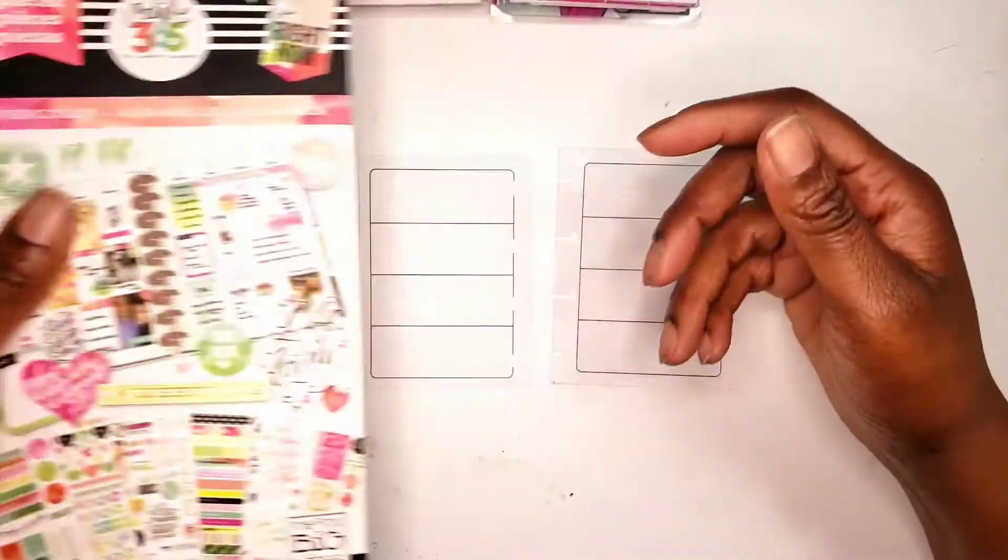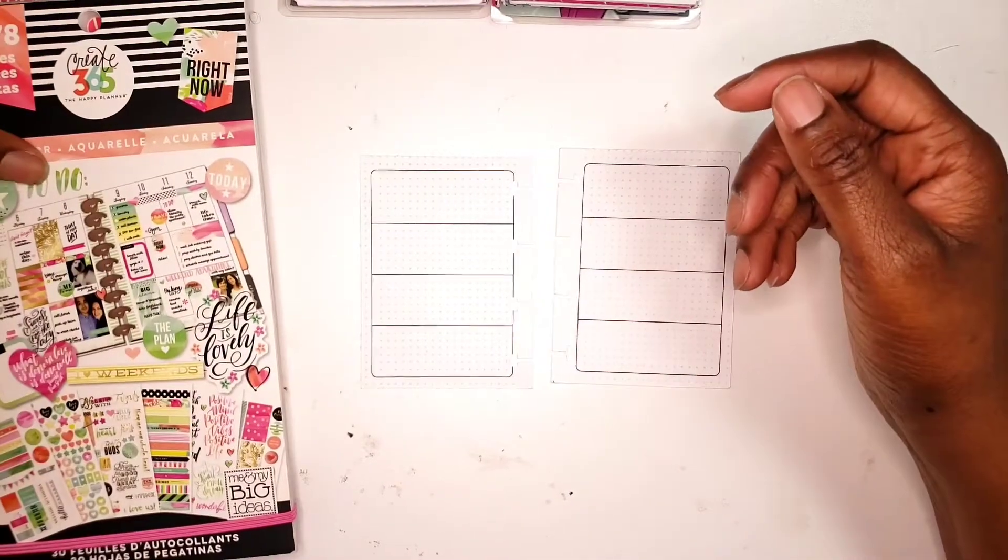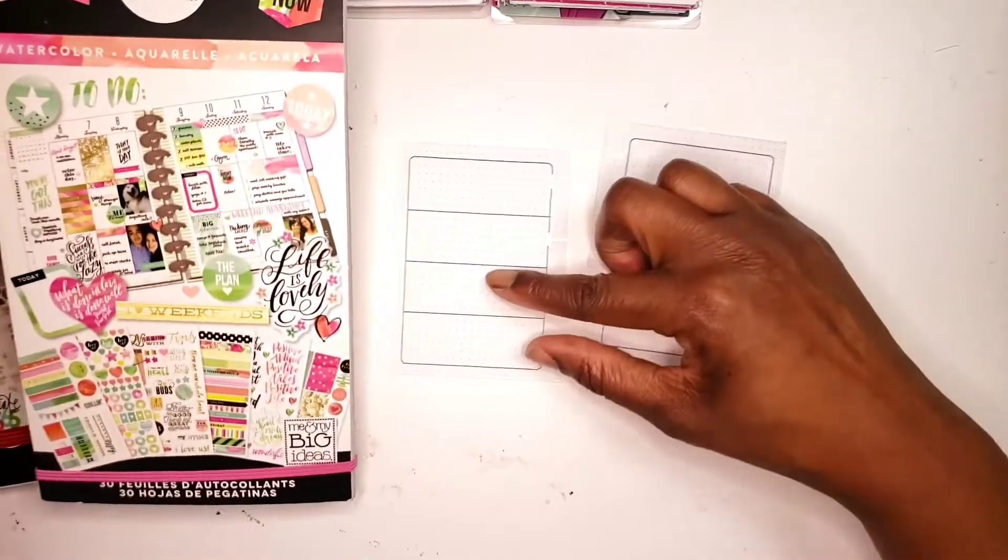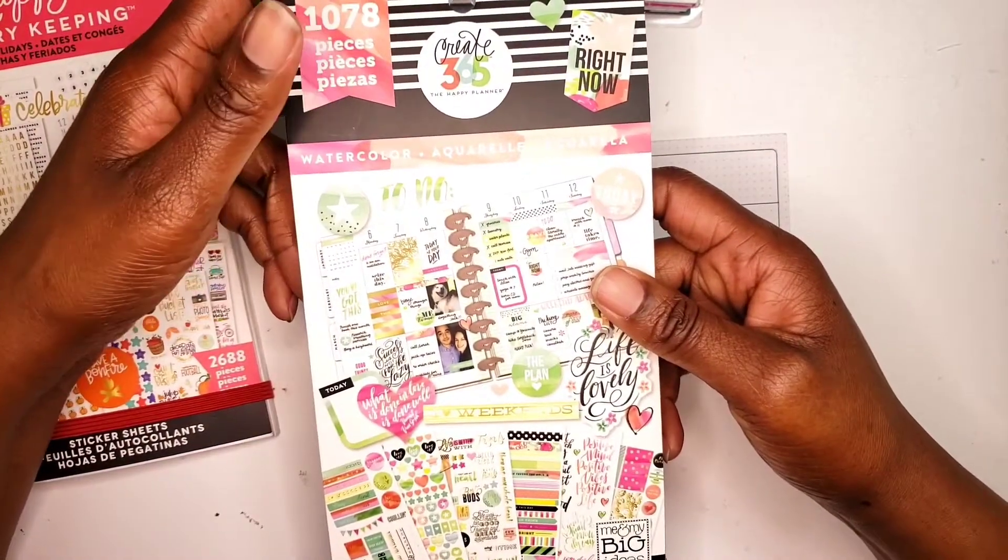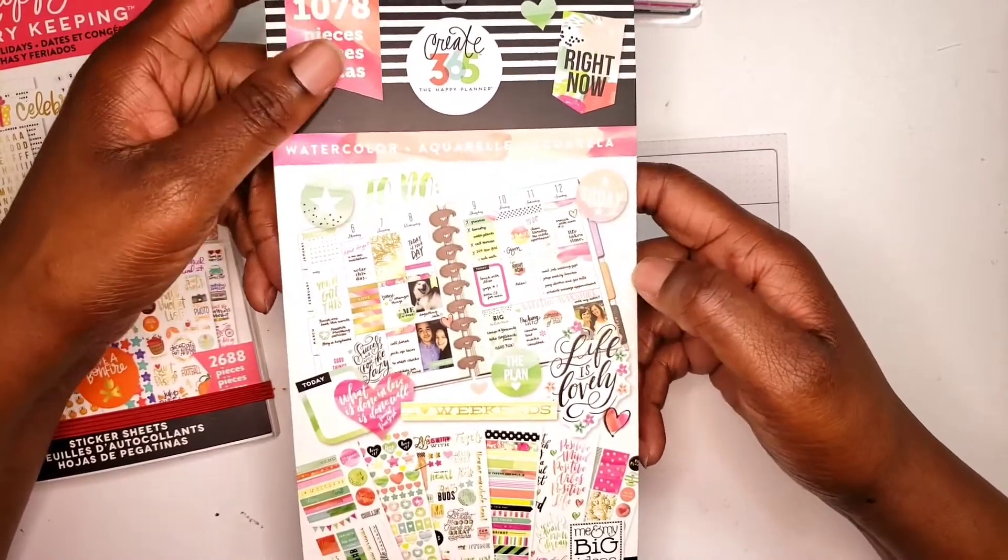So these are pretty much the two sticker books that I'm going to use. Like I've said in previous videos, if you haven't seen it, I really do try to stick to using one sticker book for the decorative items that I use.